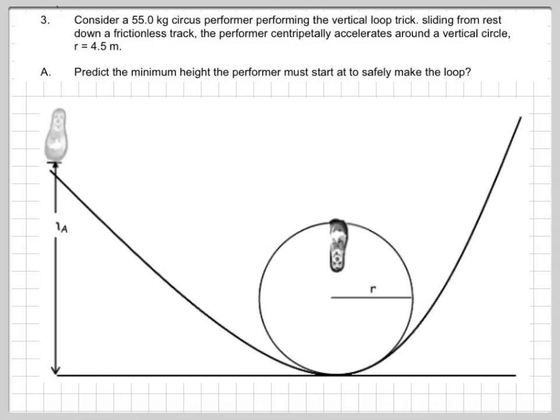We're going to call that initial height A, like the initial position of the performer at this location is height A. And then they're going to perform the trick, slide back up to some similar height, and then back again, and I guess indefinitely complete this trick. But most importantly, we're interested in what's happening right there at the top of the loop. We'll call that position B. And we're going to solve this problem using the conservation of energy.